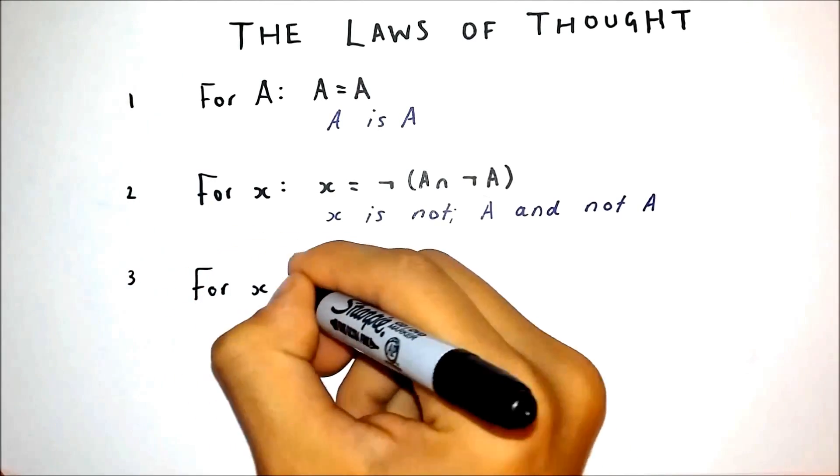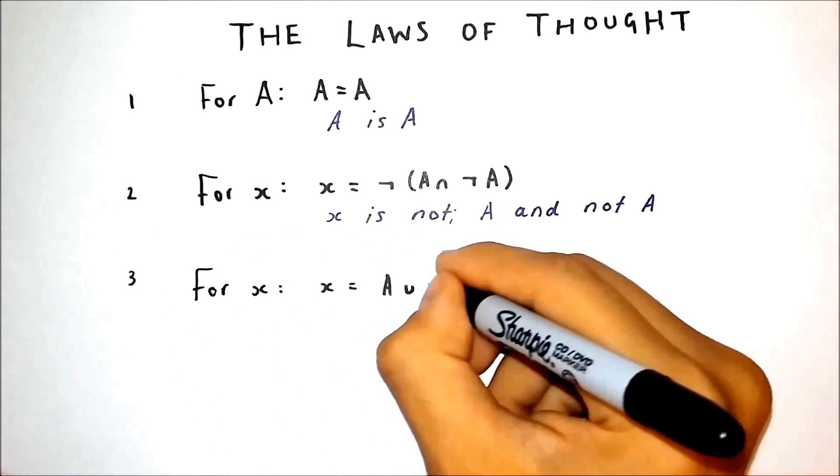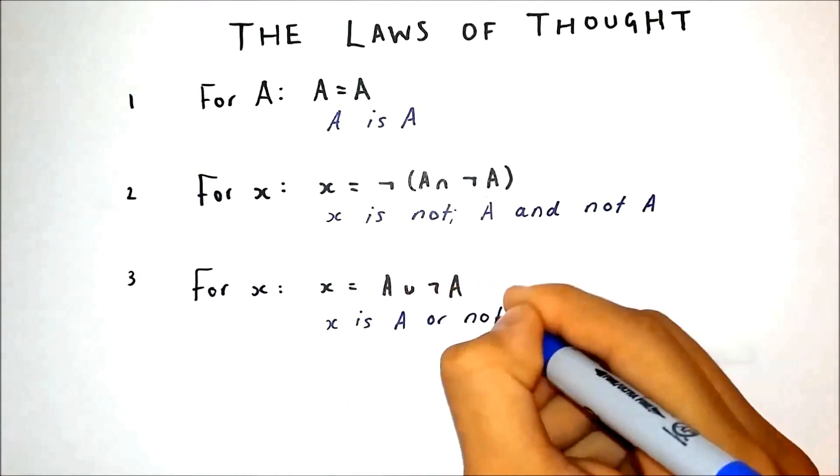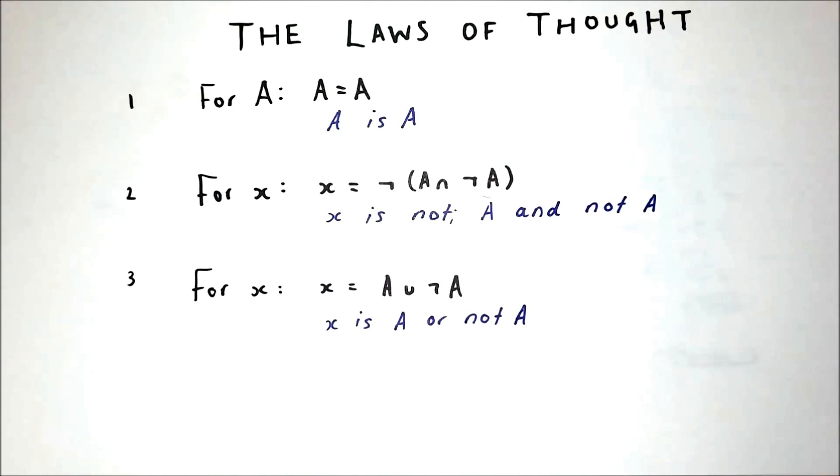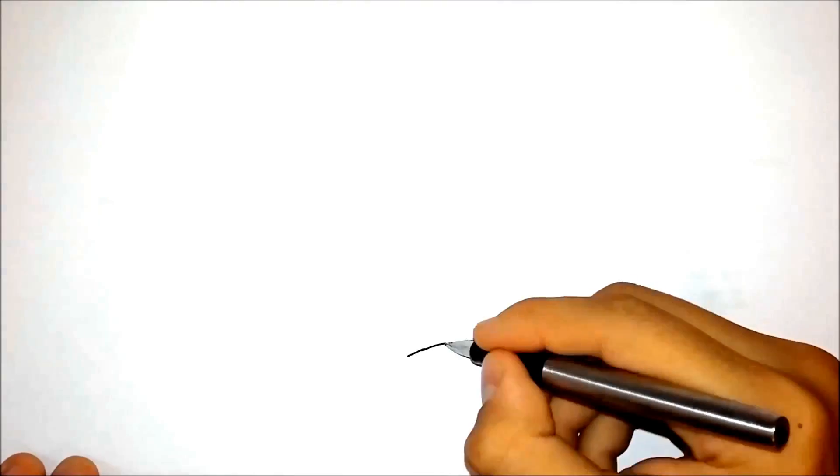The law of excluded middle states, everything must either be or not be. Sounds pretty reasonable for sure. But while they all appear as common sense, this story is not yet complete.